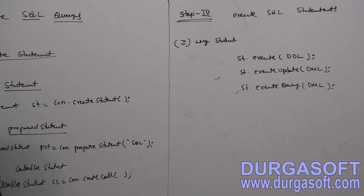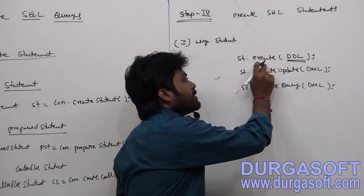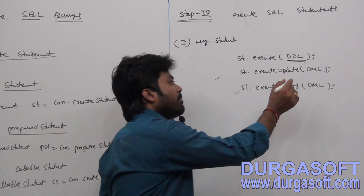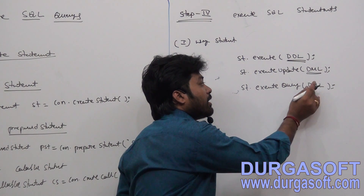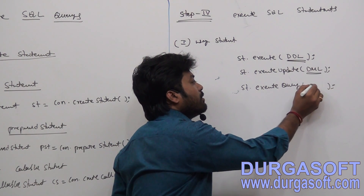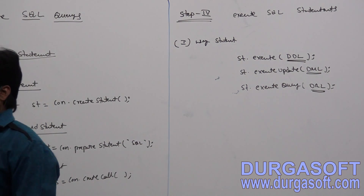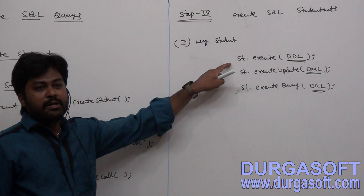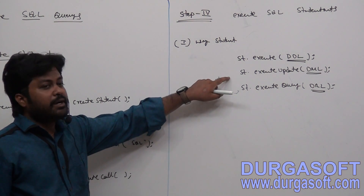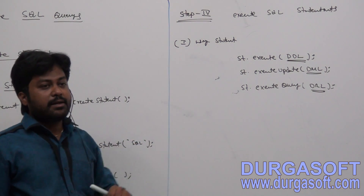So there are three ways: to execute DDL statements, use the execute() method; to execute DML statements, use the executeUpdate() method; and to execute DRL, we have the executeQuery() method. Using these three approaches, you can make database calls — the first is useful for DDL, the second for DML, and the third for DRL, which is data retrieval.